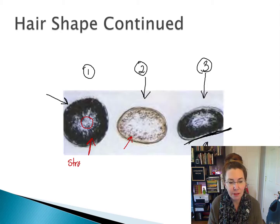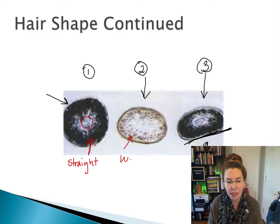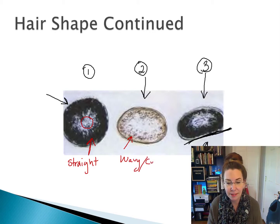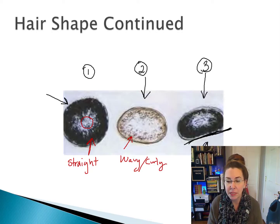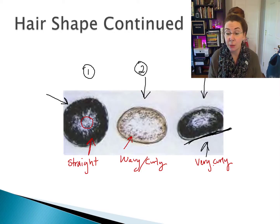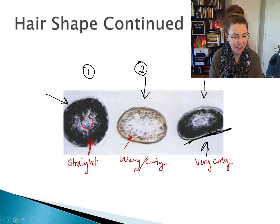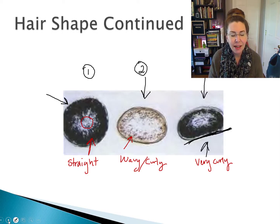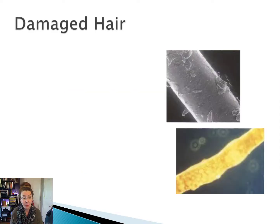So that allows us to know something about the texture of the hair. Hair one would be straight, hair number two would be wavy to curly, and hair three would be very curly. That gives you an idea of how we can determine texture based on what we're seeing in the microscope. Now let's go on to talk about other things that we can see in hairs.